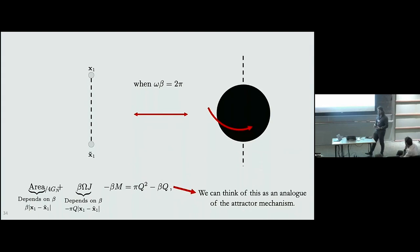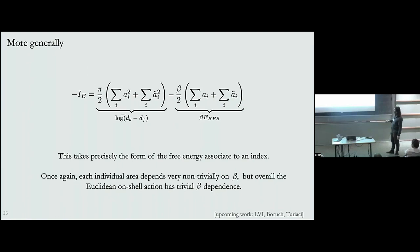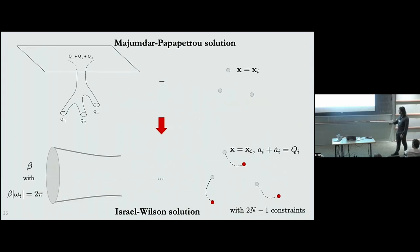We can think about this as an analog of the attractor mechanism. In the original attractor mechanism, quantities such as the area of the horizon are insensitive to the boundary conditions imposed at infinity. Here we see that's not the case for the area, but it is the case for the overall Gibbs free energy. One can do this more generally and it's still true that the Euclidean action takes the form of an index, and still true that β·Ω equals 2π.